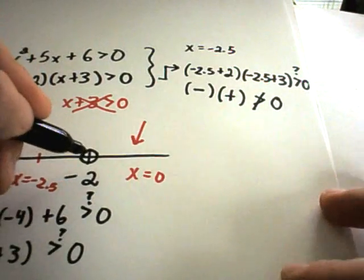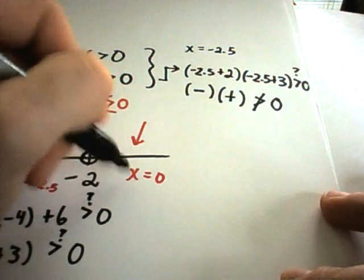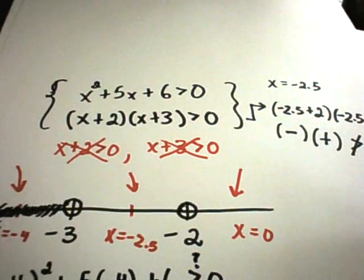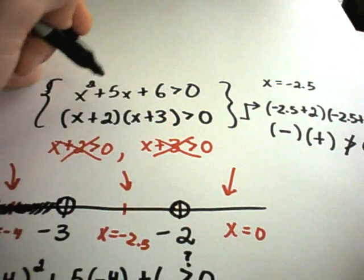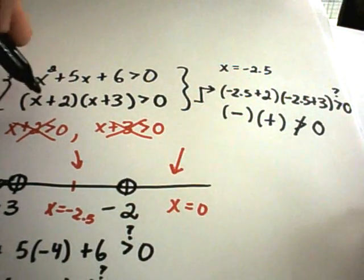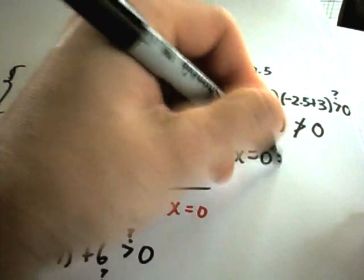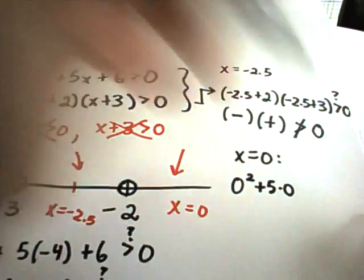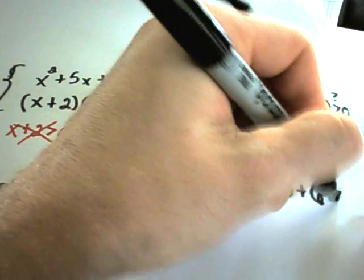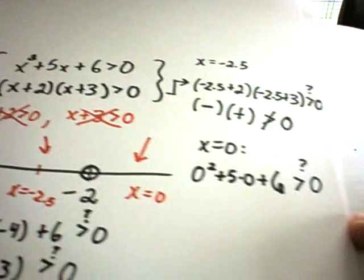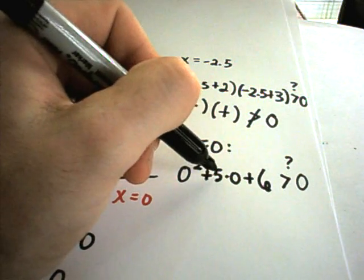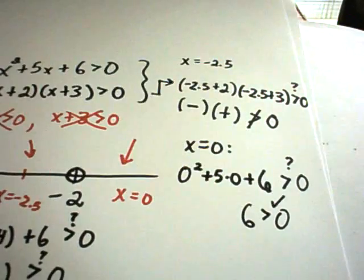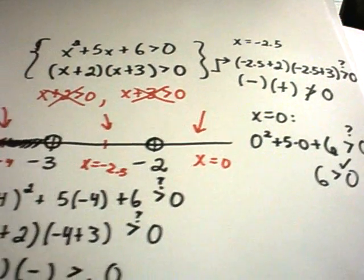For the last interval, take a number bigger than -2. We pick x = 0, which usually makes the arithmetic easy. Plugging x = 0 into the original inequality: 0² + 5(0) + 6 = 6, and 6 is certainly greater than 0. So numbers greater than -2 also work.